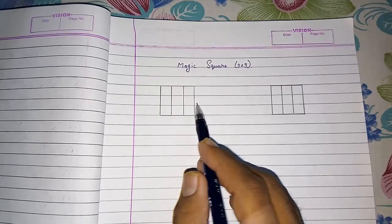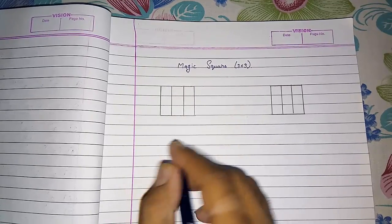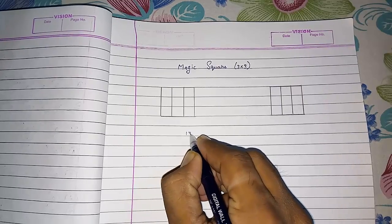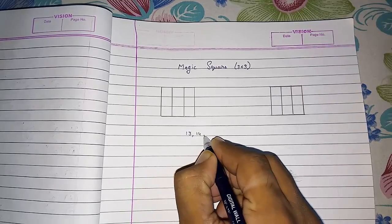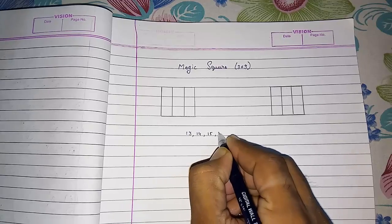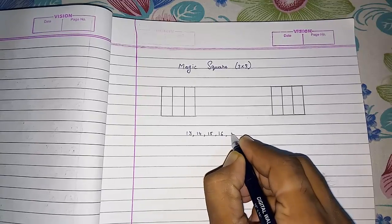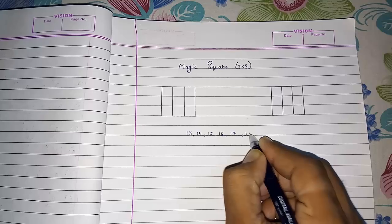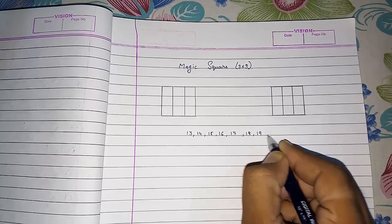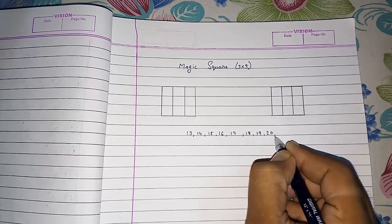First, I am taking any consecutive 9 numbers. So we take from 13: 13, 14, 15, 16, 17, 18, 19, 20, and 21.